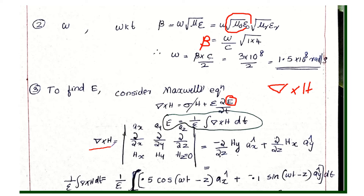Now, del cross H is expanded as a determinant with components: ax, ay, az in the first row; dou by dou x, dou by dou y, dou by dou z in the second row; and hx, hy, hz in the third row.